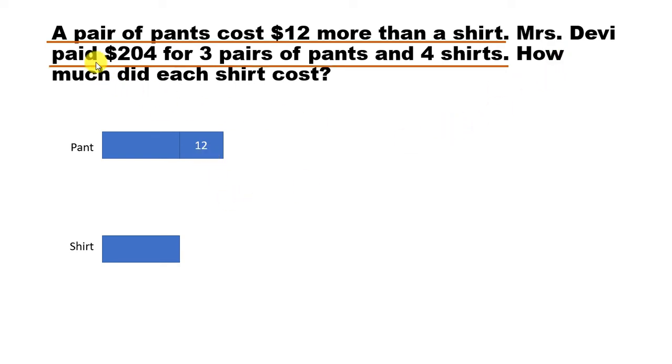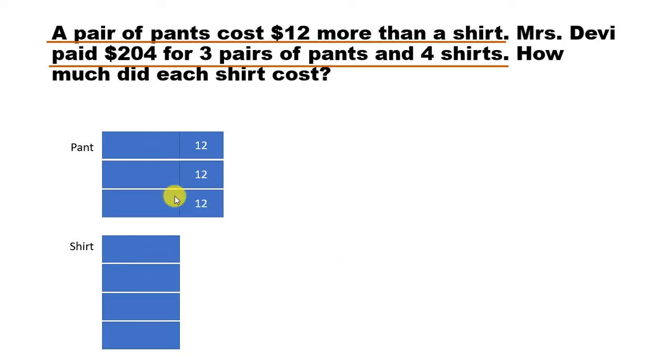Now Mrs. Devi paid $204 for three pairs of pants and four shirts. So three pairs, so three such things, and four such units here. So this is what Mrs. Devi bought and she bought it for $204. From the diagram it's quite clear that these are all of the same size. Actually, units are of the same size.